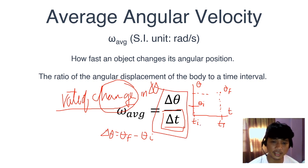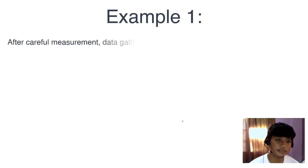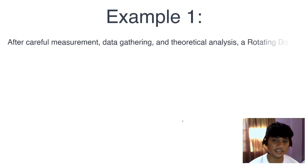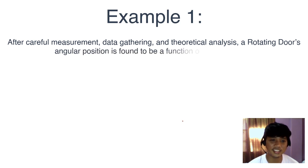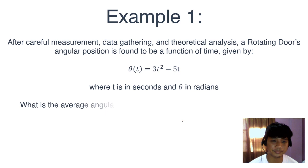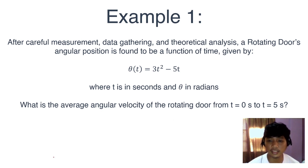Important is the denominator, delta t. Delta theta over delta t. This is just the slope, rise over run. Here's an example. After careful measurement, data gathering, and theoretical analysis, a rotating door's angular position is found to be a function of time given by theta is equal to 3t squared minus 5t, where t is in seconds and theta in radians. What is the average angular velocity of the rotating door from t equals 0 to t equals 5?